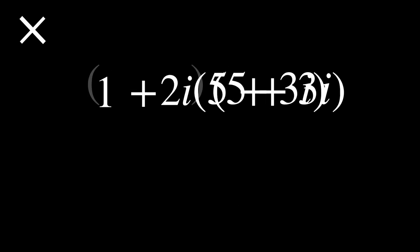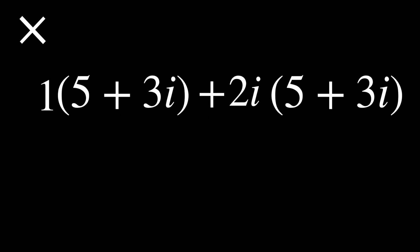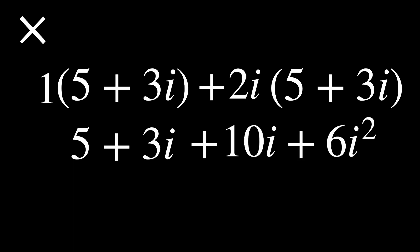Now, what about multiplication? To multiply, we can distribute each of the terms to the number. Using the distributive property, we can write this as 1 times 5 plus 3i plus 2i times 5 plus 3i. Then, we distribute each of the terms to the inside. Doing that gives us 5 plus 3i plus 10i plus 6i squared. But we know that i squared is equal to negative 1, so we can put that in to get 5 plus 3i plus 10i minus 6. Then, we can combine like terms to get negative 1 plus 13i.